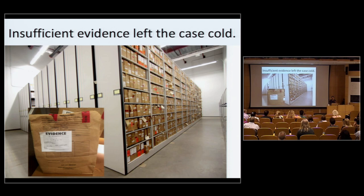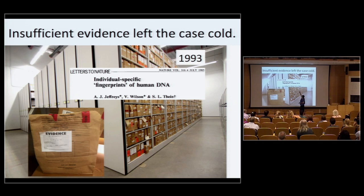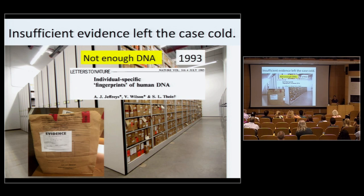About ten years later, the police department put together a cold case team. They re-evaluated the evidence, in part because a paper had come out in the middle 1980s by Alec Jeffries in Great Britain proposing a method for analyzing DNA called DNA fingerprinting, which had been used to solve crimes in England. The investigators were hopeful they could apply similar techniques here. Unfortunately, when they looked at the samples they had, there was insufficient DNA to use this older method, and again the case went cold.